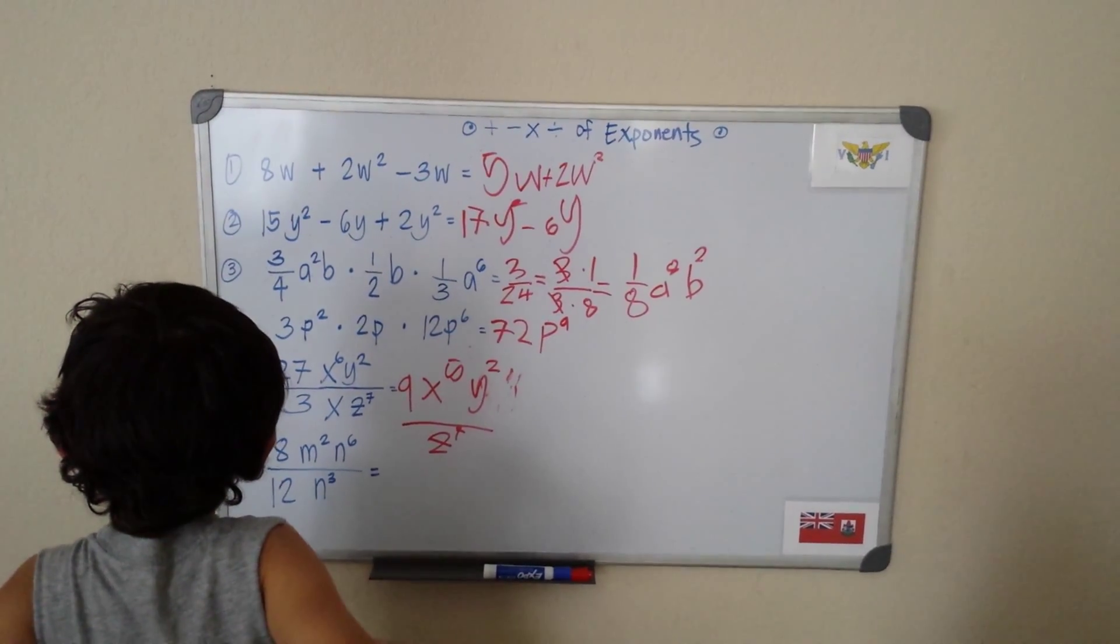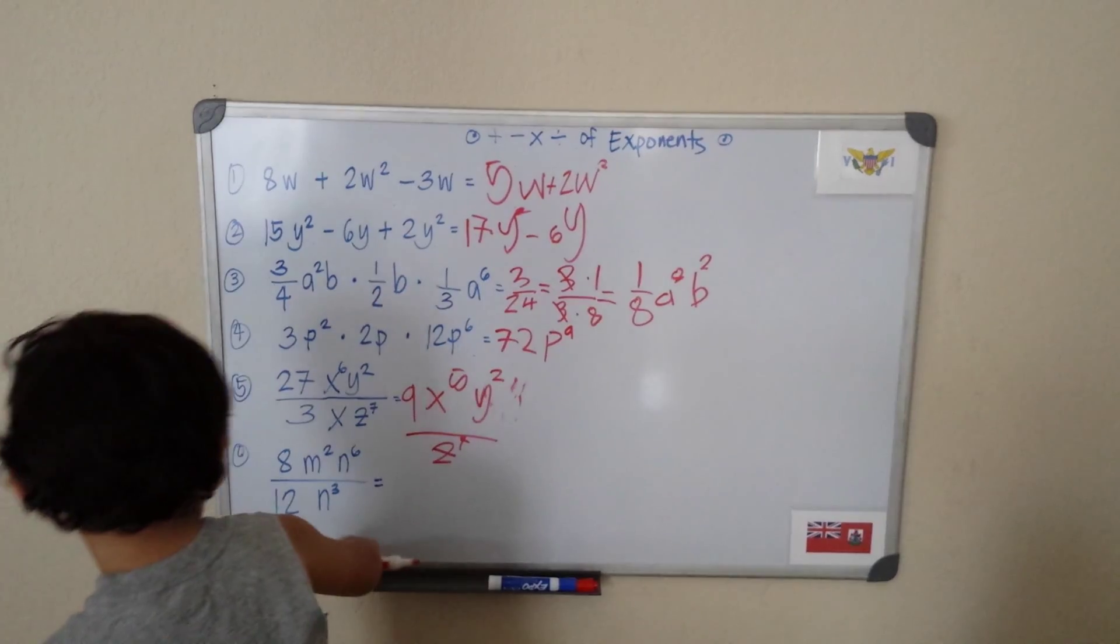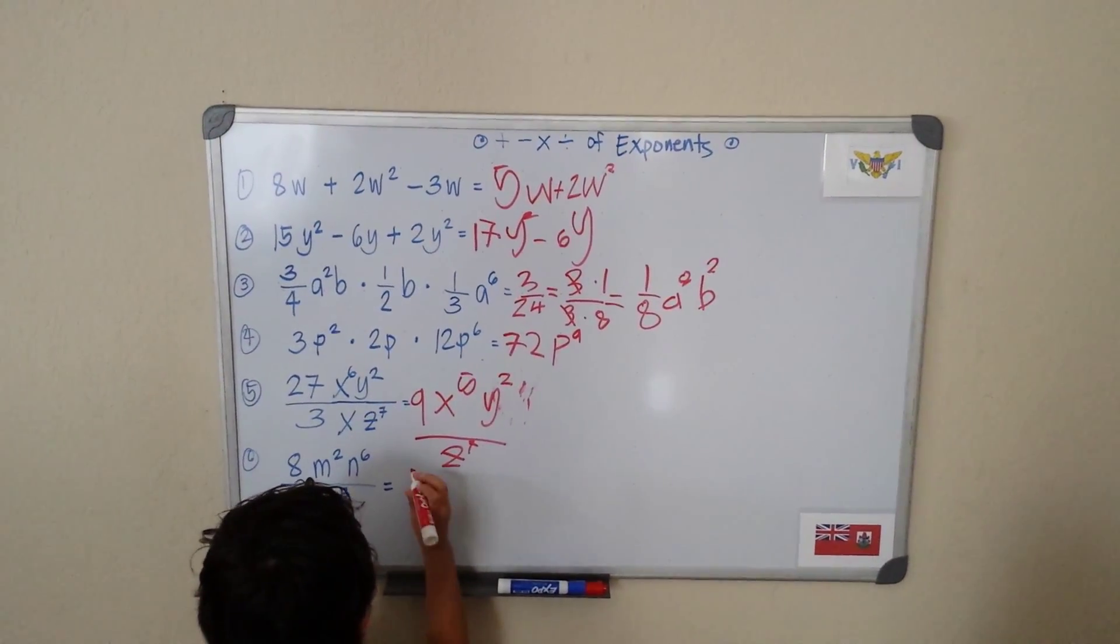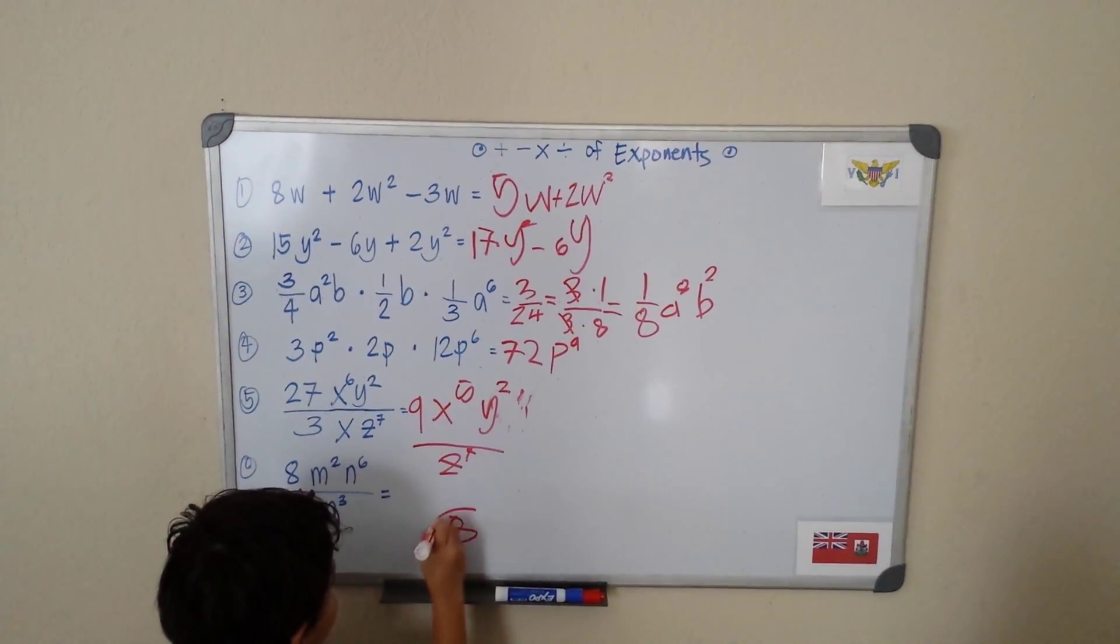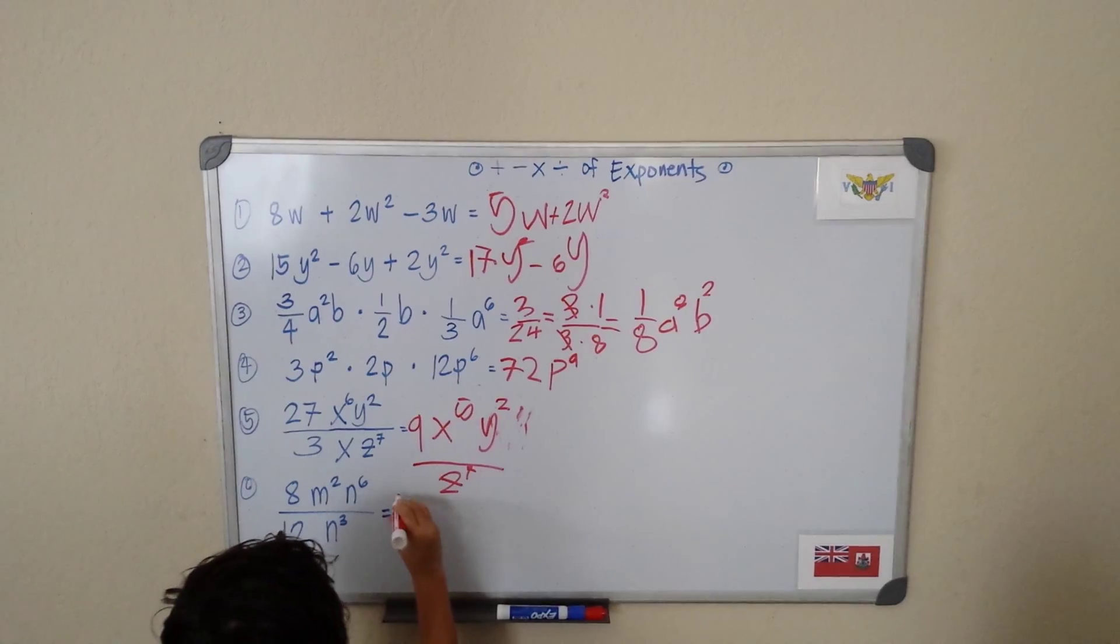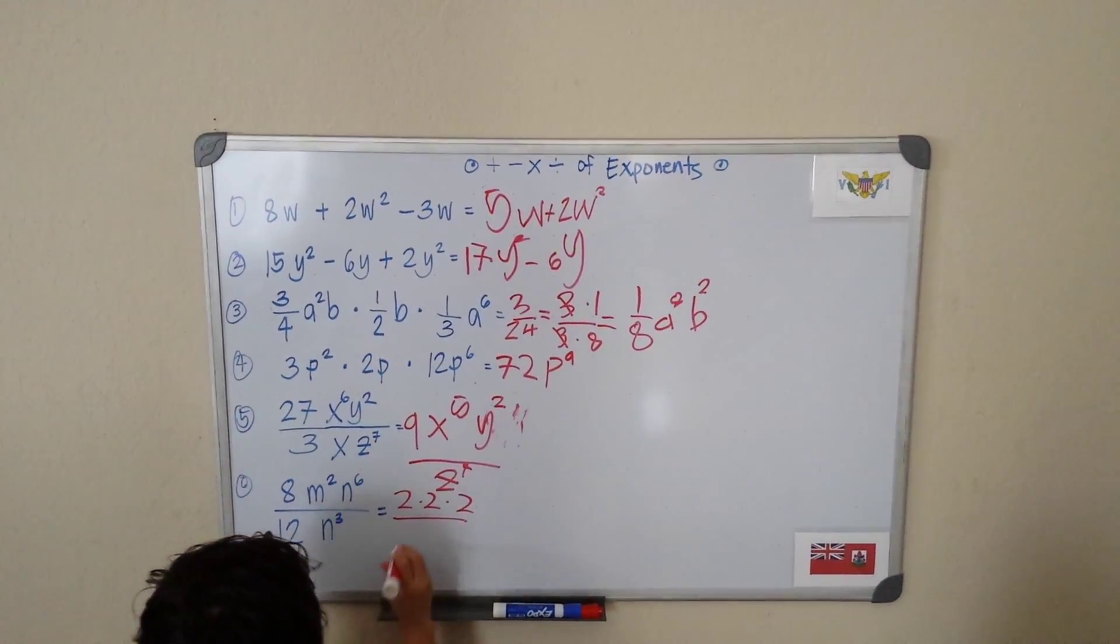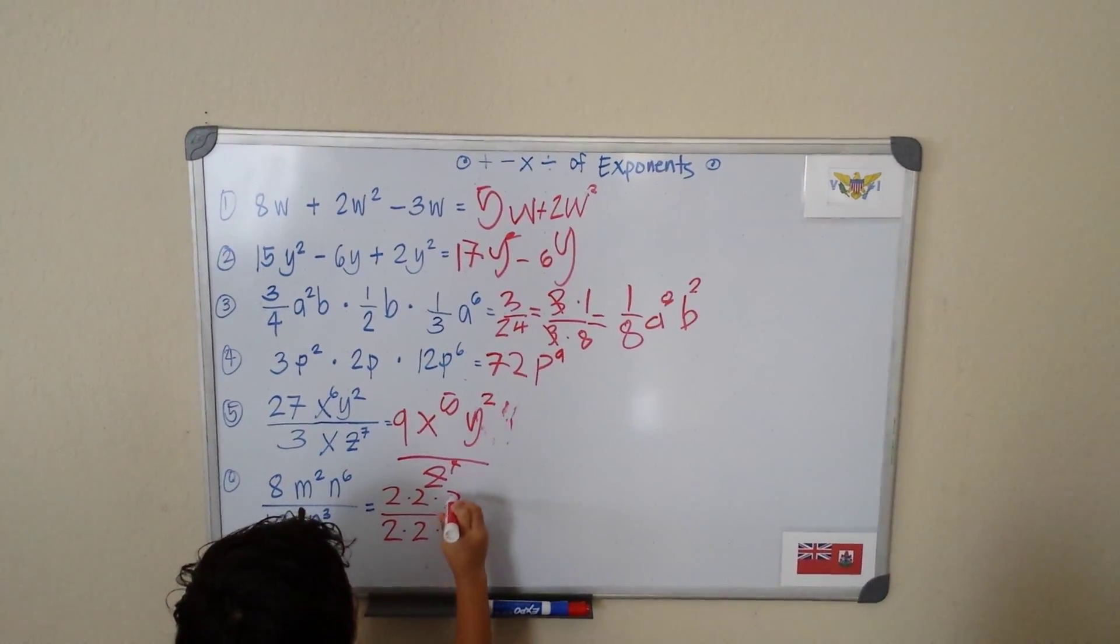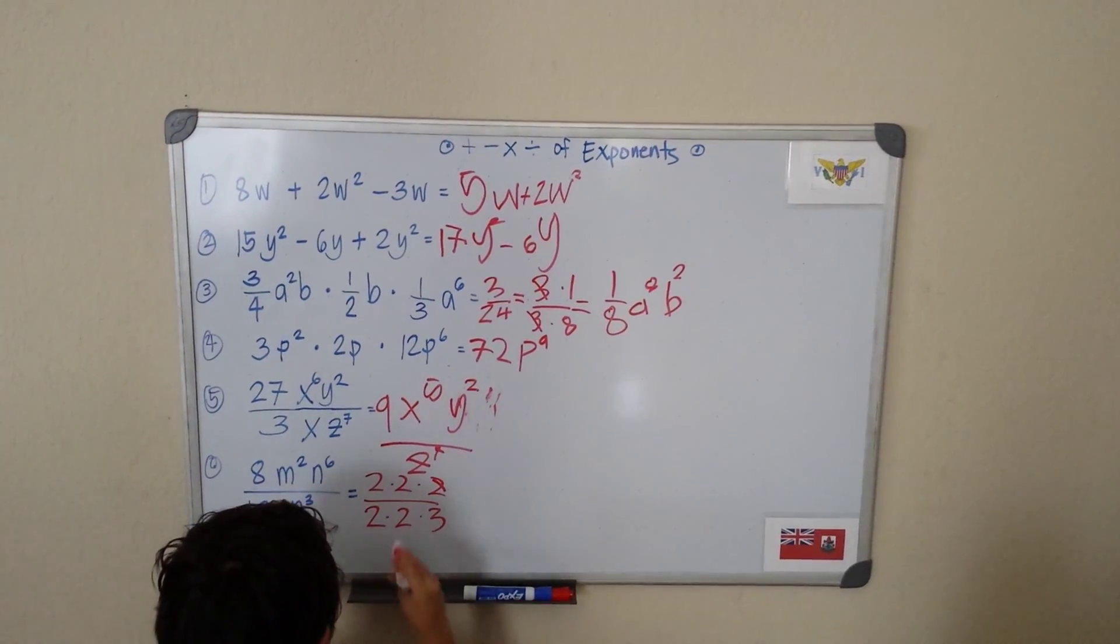Now I think we can do one more. Let's just talk about one more. So we can get that one, and we can get 8 divided by 12. We just have to apply a factor. So 8 is 2 times 2 times 2, and my 12 is actually 2 times 2 times 3. So 12.